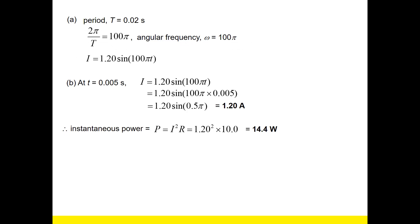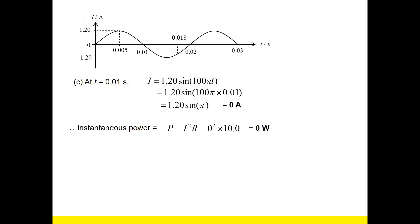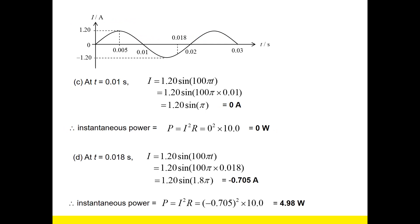The point of parts B, C, D is not just to plug in numbers — it's to realize that the power value varies with the current. If you look at part D, even when the current is negative, the power becomes a positive value. So for AC current, your power will vary between 0 and a certain maximum value. Your power can never be negative. That is essentially what I want you to get from example 1.